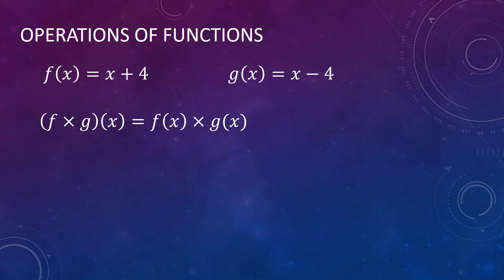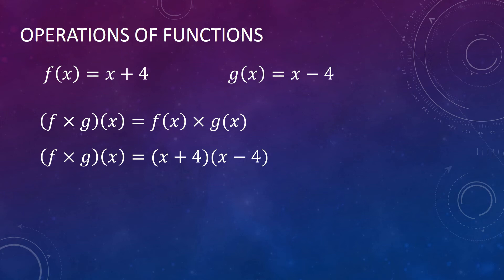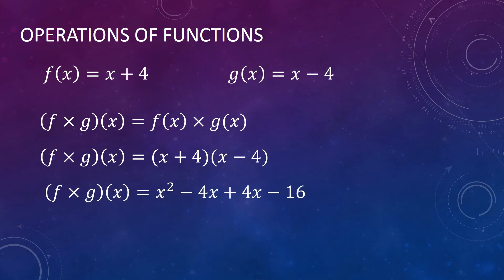Another example for multiplication of functions: f of x is equal to x plus 4 and g of x is equal to x minus 4. Let us get the product of the functions. f of x times g of x equals x plus 4 times x minus 4. Using the FOIL method, we get x squared minus 4x plus 4x minus 16. By combining like terms, this simplifies to x squared minus 16. So this is the product of our functions f of x and g of x.